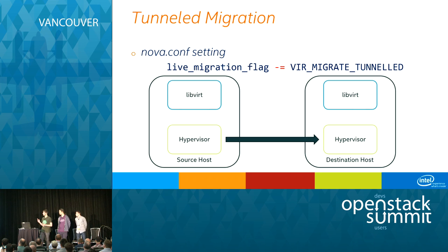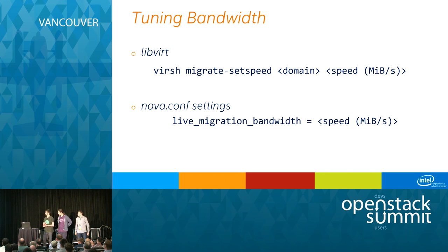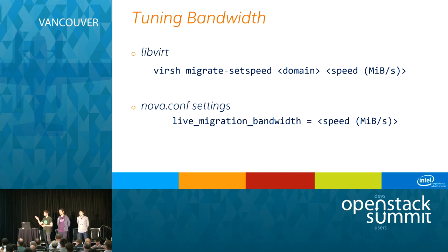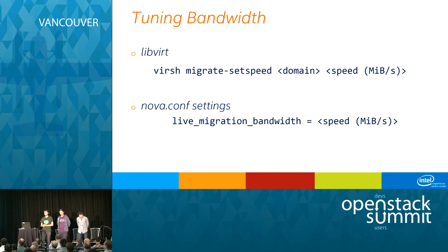You may also tune the bandwidth used by a single live migration process. There are two ways: a libvirt command for a specific VM, and the global nova.conf setting live_migration_bandwidth, which applies globally for one compute node. The default value for this option is effectively infinity — around 7,000 petabytes per second. Another approach to reduce bandwidth is XOR binary zero run-length encoding compression, enabled by adding the VIR_MIGRATE_COMPRESSED flag in nova.conf. The idea is simple: you transfer the deltas of pages — the destination host receives a diff, applies it to its version of the page, and gets the updated page, lowering bandwidth used.